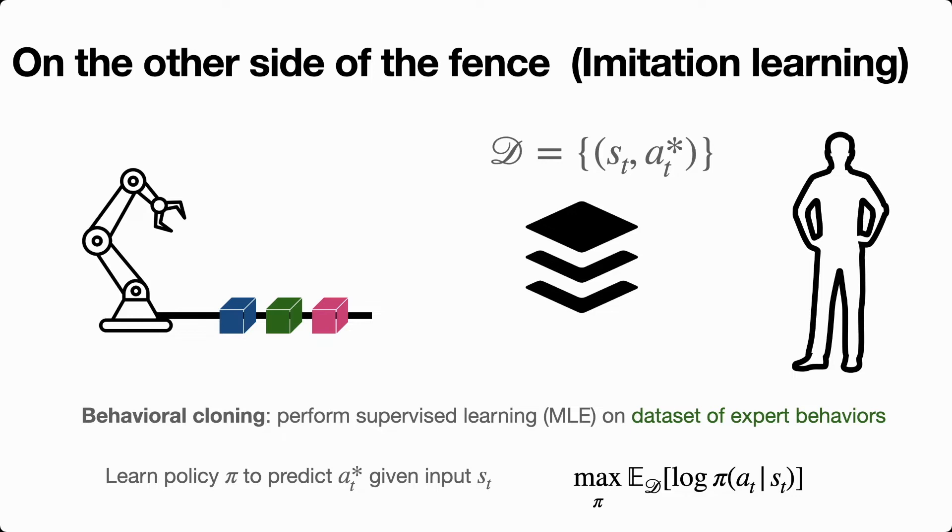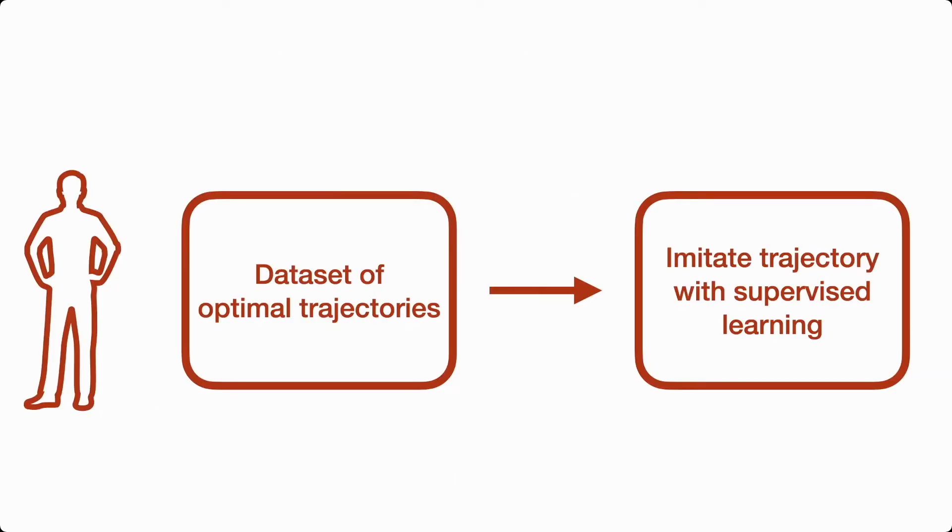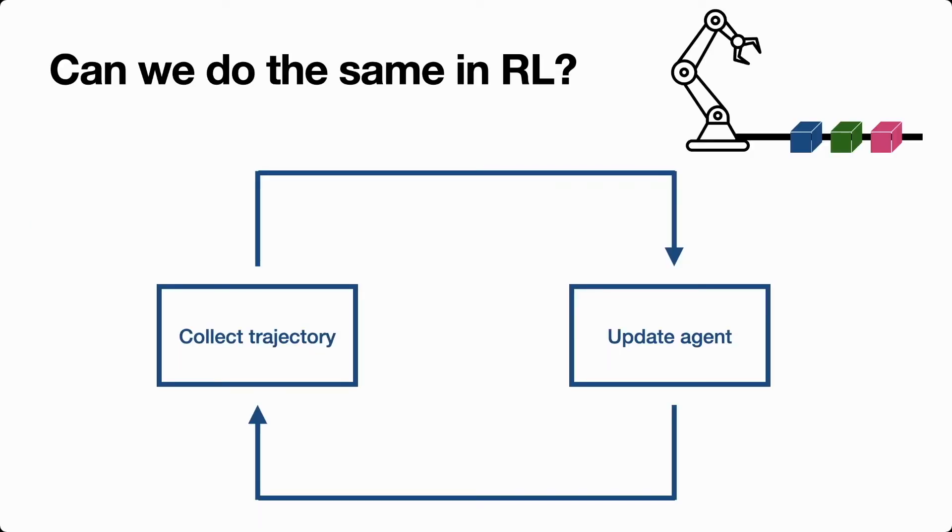This is a very practical algorithm and it's been used to learn complex behaviors from image-based and other high dimensional observations in the real world. What makes behavioral cloning tick is that when we have access to optimal trajectories, imitating these trajectories using supervised learning leads to good policies. Let's try to take this idea and bring it back into the RL formulation where instead of human experts we have to learn from feedback.